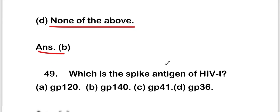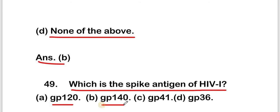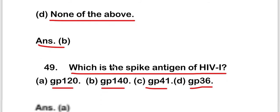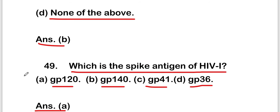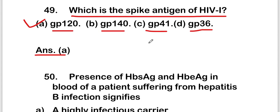The next question is: which is the spike antigen of HIV-1? Options are GP120, GP140, GP41, or GP36. The right answer is option A, that is GP120 is the spike antigen of HIV-1.